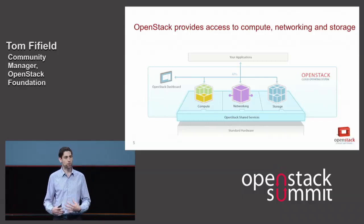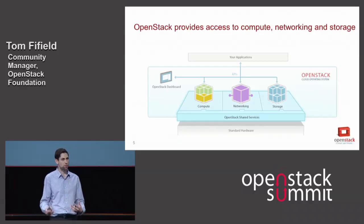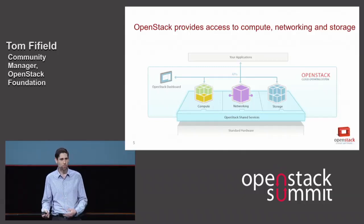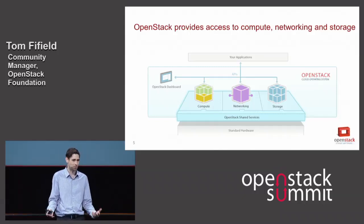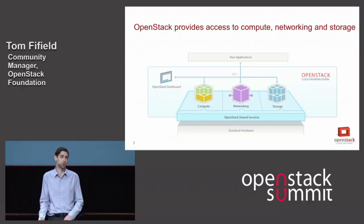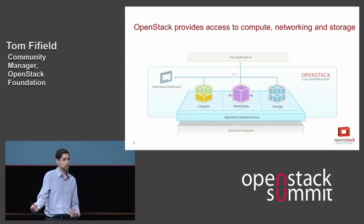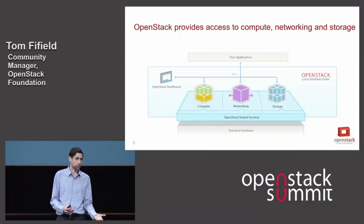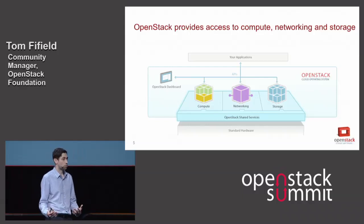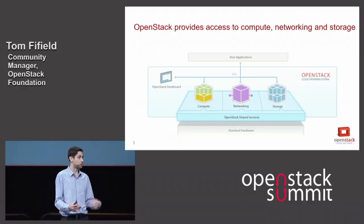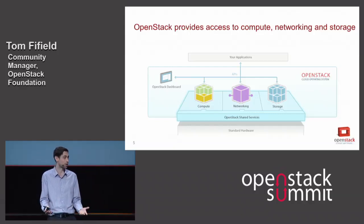OpenStack has a couple of different types of storage. Block storage is effectively like buying a USB hard disk — three or four terabytes — bringing it home, plugging it into your desktop, then unplugging it and using it on your laptop. OpenStack block storage is like that but with virtual machines: choose the size of your virtual volume, choose which virtual machine it's attached to, and switch between them. It's also pluggable, so if you have existing storage from Hitachi, EMC, or NetApp, you can point OpenStack at that storage and get block-based storage controlled in a cloud environment.